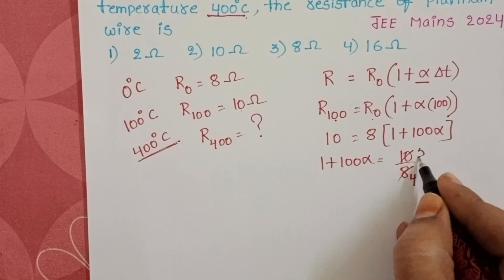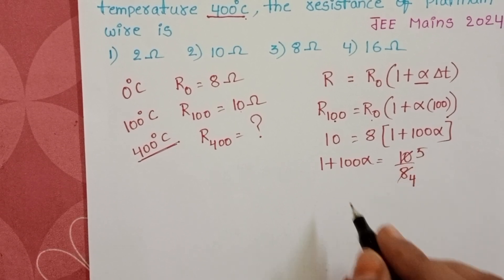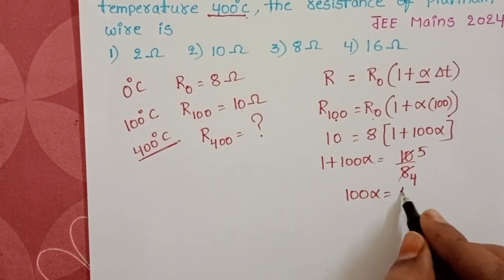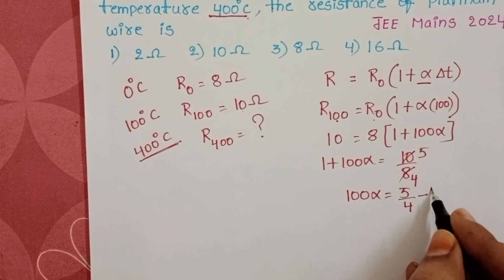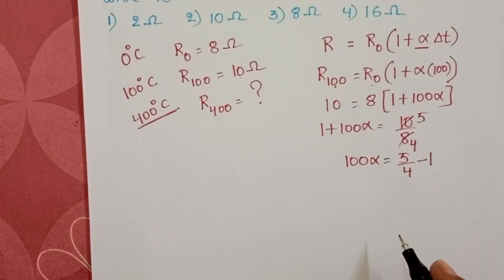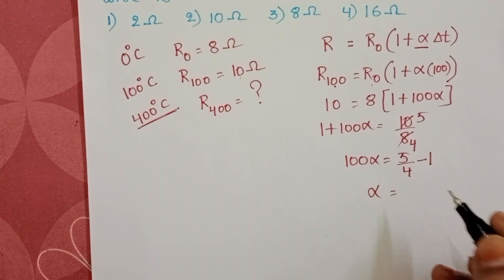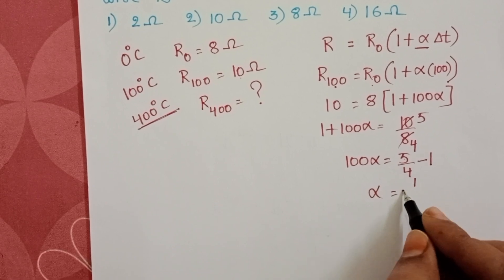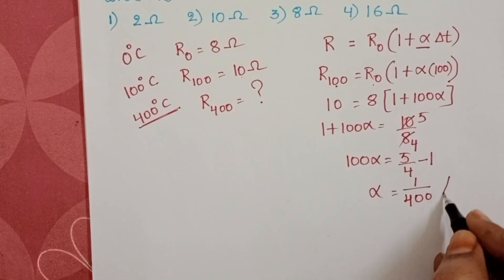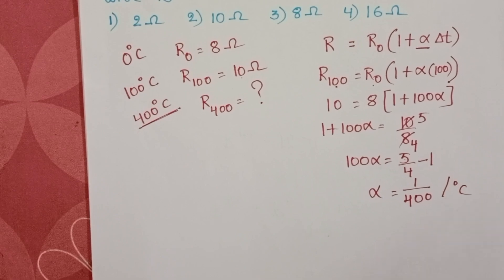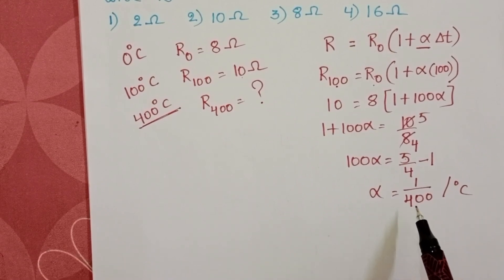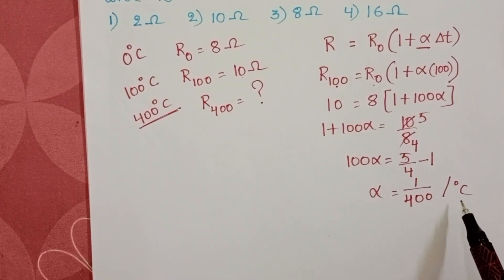Simplifying: 10/8 = 5/4, so 100α = 5/4 − 1 = 1/4. Therefore alpha = 1/400 per degree Celsius. This is the value of the temperature coefficient of resistance.